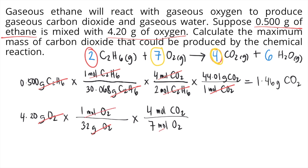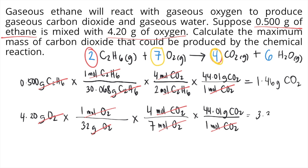The moles of O2 cancel and now you have moles of CO2. Finally, same as before, convert moles of CO2 into grams of CO2 using the molar mass of CO2. The moles cancel, and solving on a calculator you get approximately 3.30 grams of CO2.